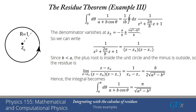We can check this result: if b = 0, we just have the integral of 1/a from 0 to π, which equals π/a, and indeed the formula gives π/a. On the other hand, if b = a, there's a real singularity where the integrand blows up, so the integral becomes infinite. Taking the limit b → a in our answer gives π/√0, which is indeed infinity. So the result is correct for all a and b as long as a > b.